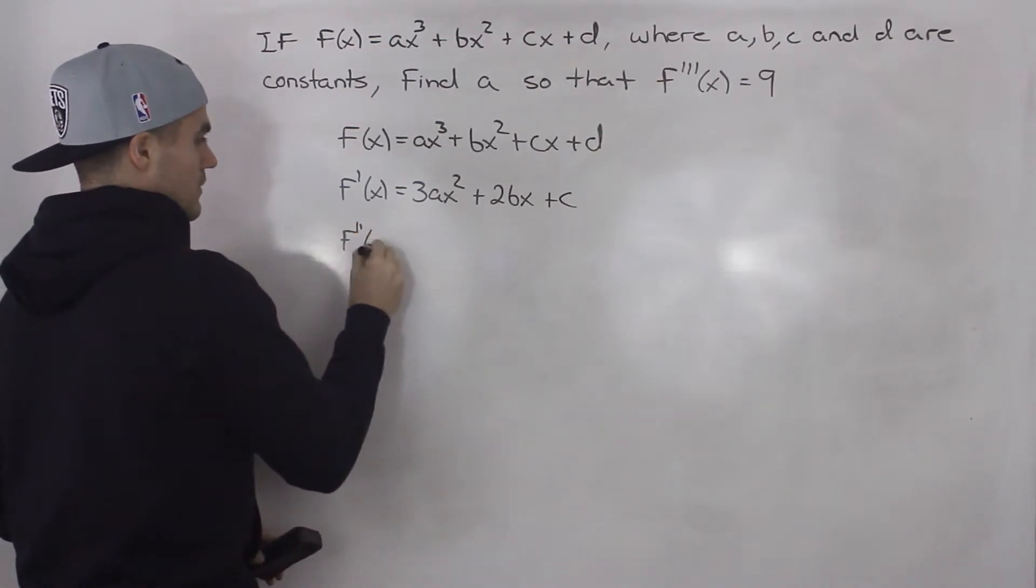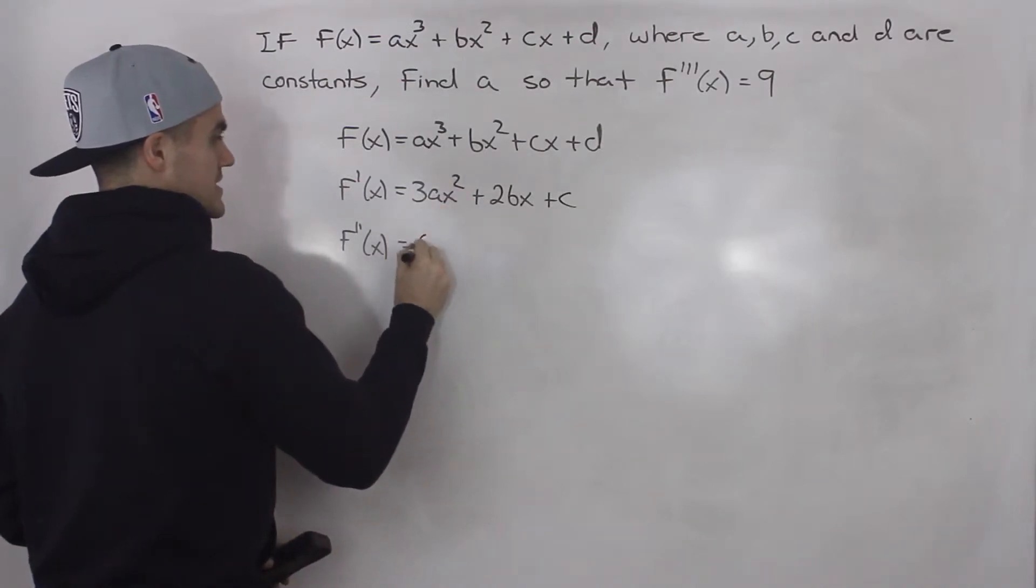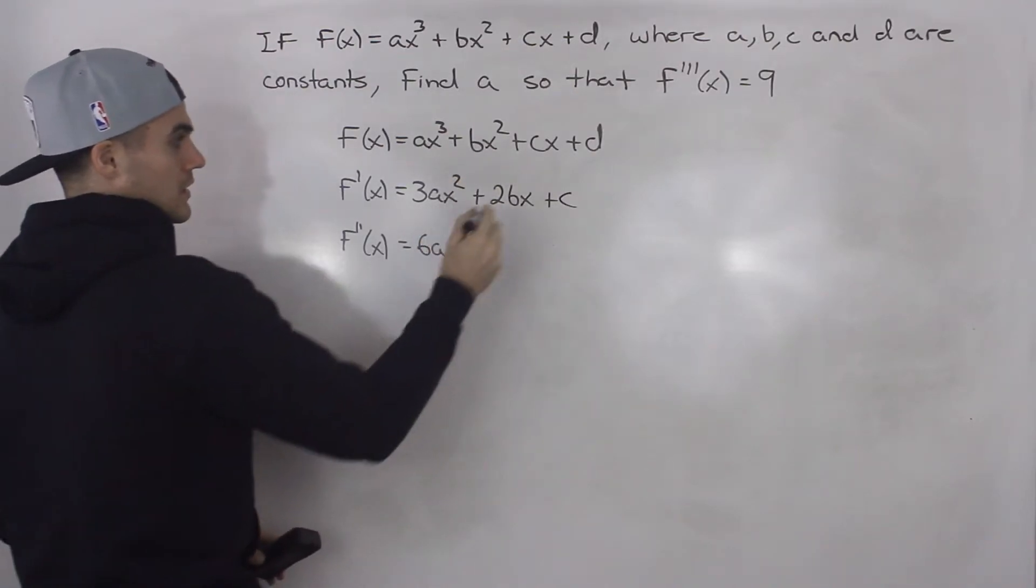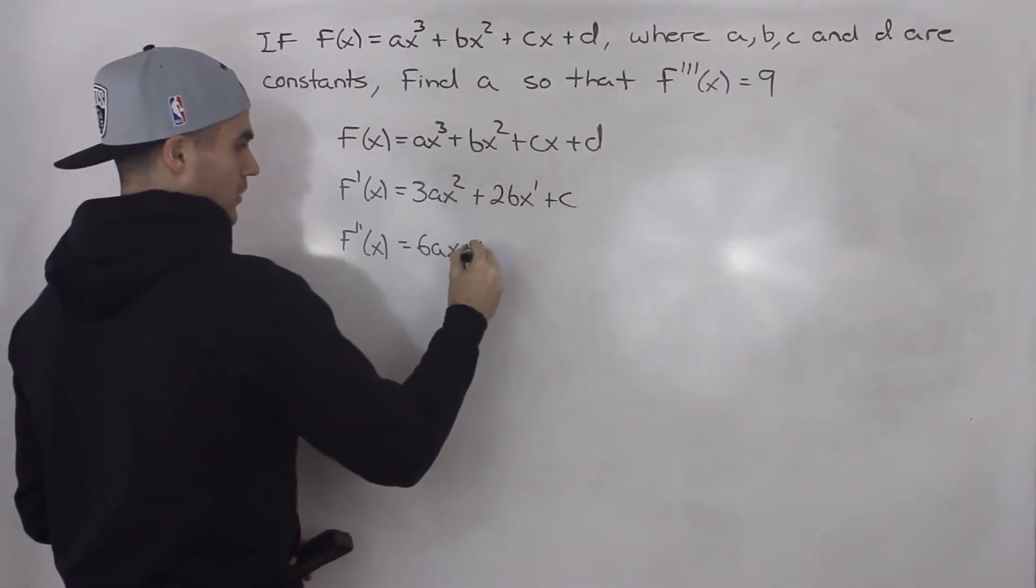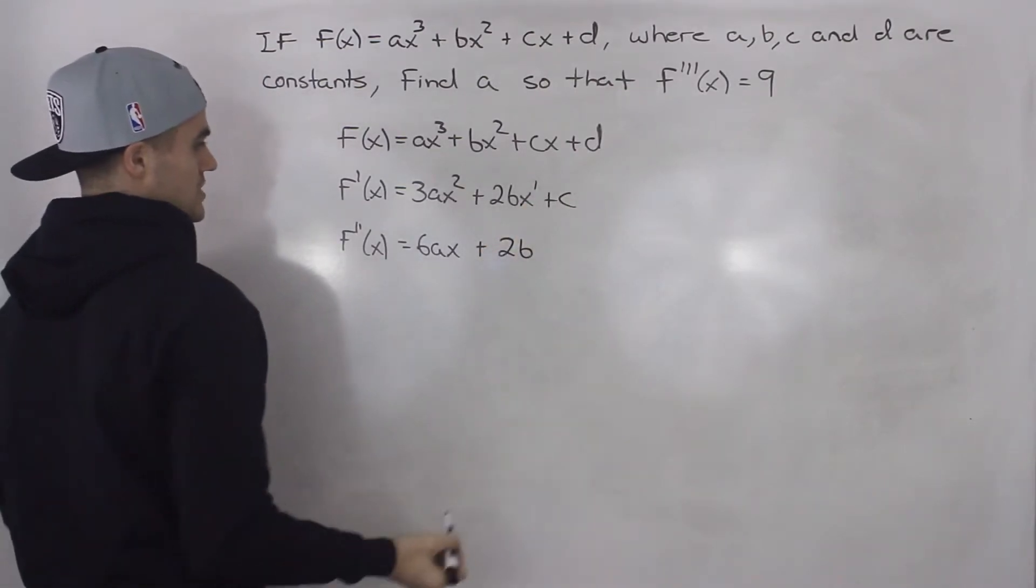Second derivative, same thing. Bring the exponent down, 2 times 3 is 6, ax, right, subtract 1 from the exponent. Here, bring 1 down, and we'll just be left with 2b, and then the derivative of c is just 0.